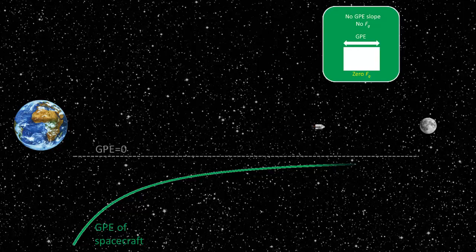When the GPE slope is totally flat, we know the spacecraft has arrived at the null point, where the net gravitational force is zero.